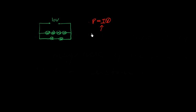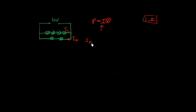Assuming each light bulb has a resistance of 1 ohm, the four-bulb branch has twice as much resistance as the two-bulb branch, because it has twice as many bulbs. Therefore, more current goes through the branch with least resistance. We call the currents I1 and I2 — I2 is bigger than I1, and it should actually be twice as much, in direct proportion to the resistances.